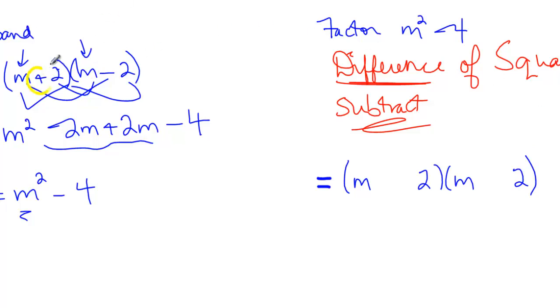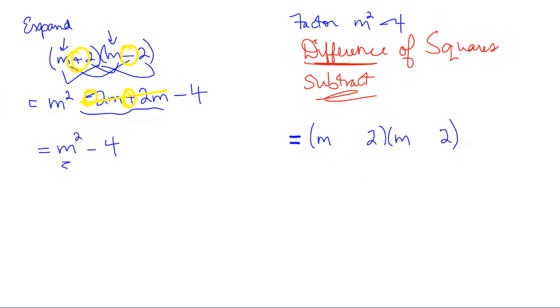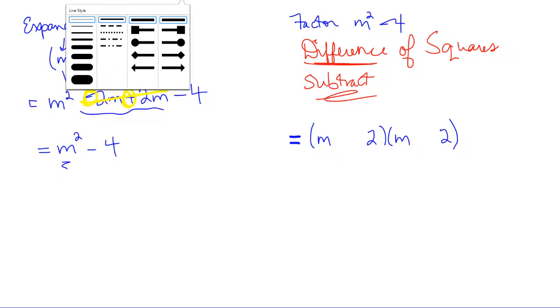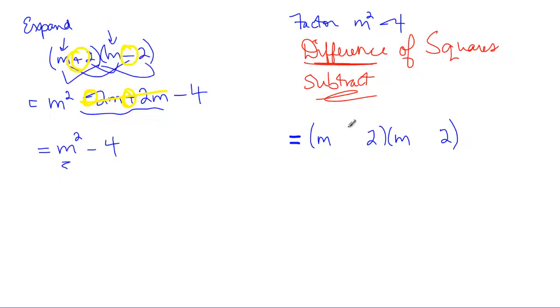Now, notice the signs in what we expanded. One was a plus, one was a minus. That was really important because that's what made these two middle terms that then cancelled one another out. When you're factoring a difference of squares, you've got something squared minus something squared. One binomial factor will have a plus. The other will have a minus.